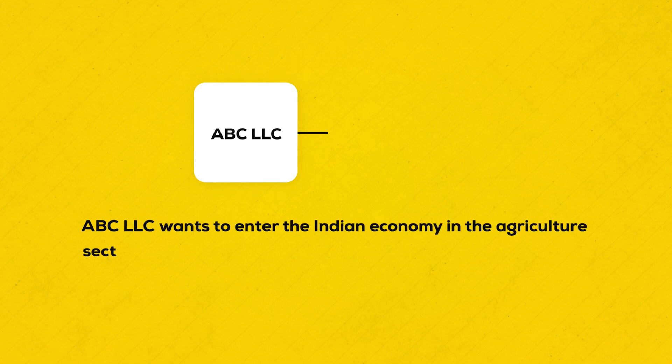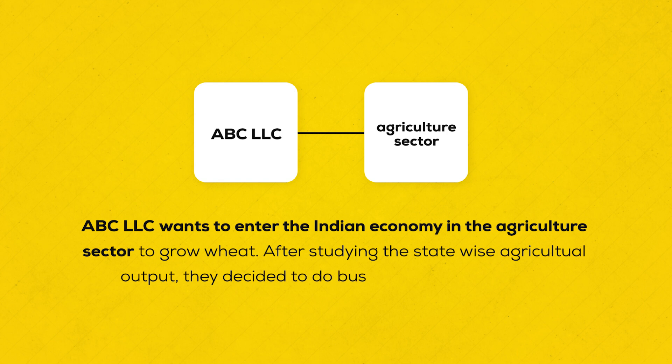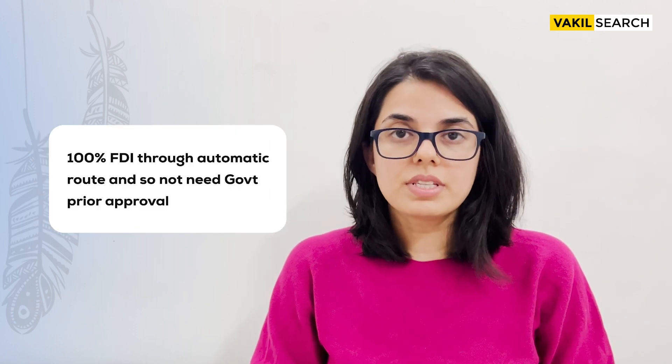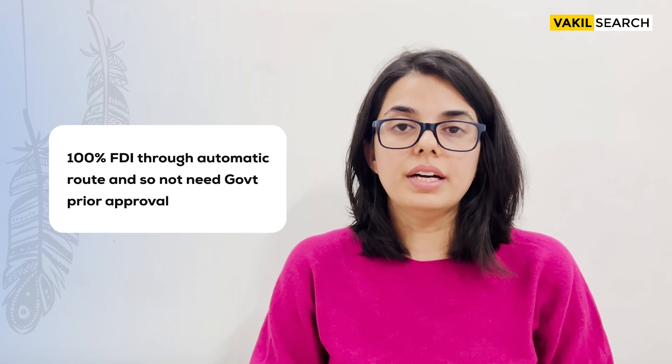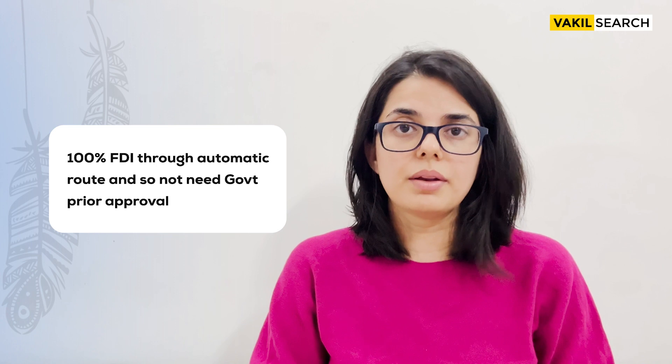To make this more clear, let me walk through a case study. ABC LLC wants to enter the Indian economy in the agriculture sector to grow wheat. After studying the state-wise agriculture output, they decided to do business in Uttar Pradesh. Is FDI allowed in that case, and if yes, how much and via which route? As we discussed, FDI in the agriculture sector is 100% allowed via the automatic route — so yes, they can bring foreign investment into India in the agriculture sector.